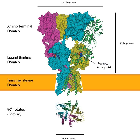Ion Channel Function. Each AMPAR has four sites to which an agonist can bind, one for each subunit. The binding site is believed to be formed by the N-terminal tail and the extracellular loop between transmembrane domains 3 and 4. When an agonist binds, these two loops move towards each other, opening the pore.